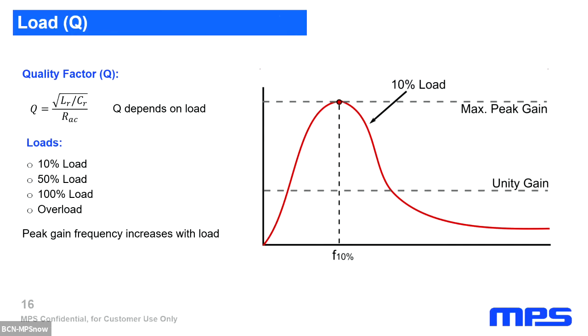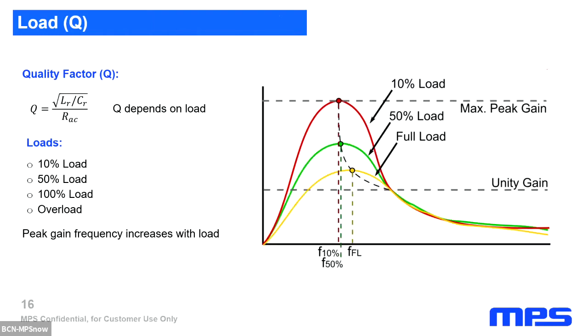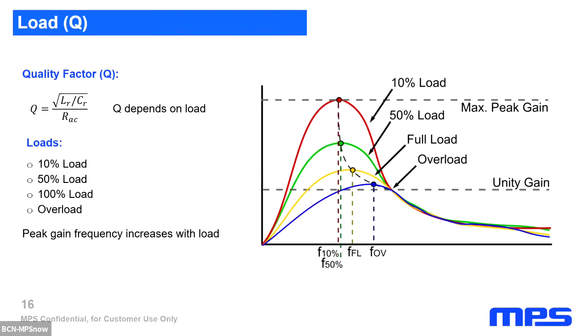Next up is the load, which is expressed through the quality factor. As the load increases, the peak gain of the resonant tank will be reduced. This means that we have to ensure that our worst case scenario, where the load is at its highest, which we also call overload, that we have to make sure that in this case the converter still meets the maximum gain requirement.